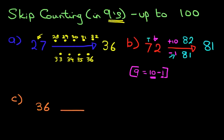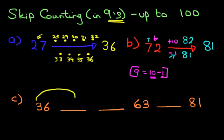We've got 36, blank, blank, 63, another blank, and 81. So, for the first one, what we're going to do is we're going to use the dot method. We have to draw a nice big arrow. And we've got to draw nine dots.